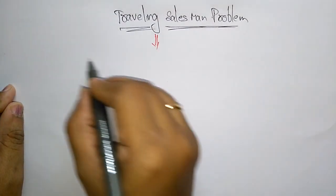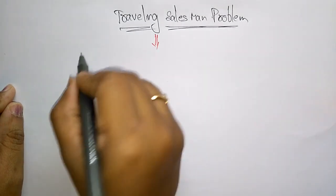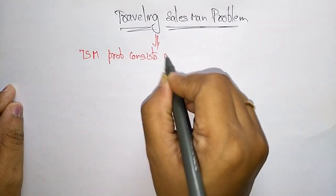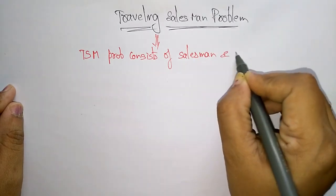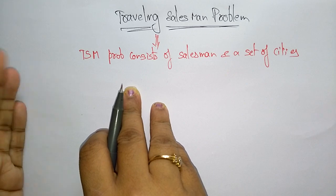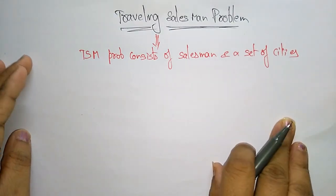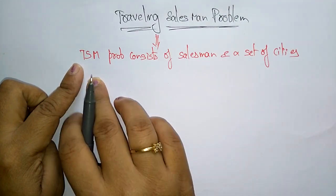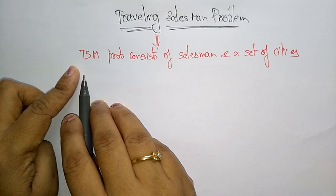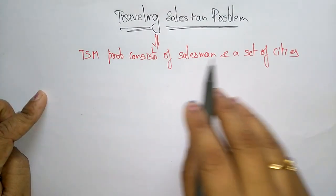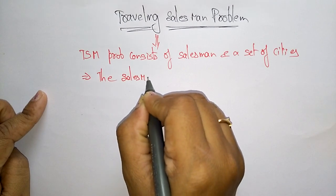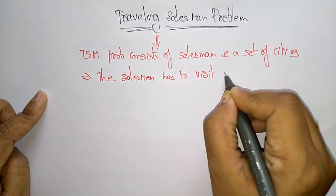The Traveling Salesman Problem consists of a salesman and a set of cities. The main thing here is we have to take one person — the person that is visiting all the set of cities. We have to find out the person traveling to all the cities such that the final cost of visiting the cities should be minimum.